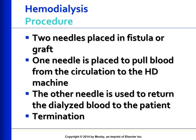For the procedure, the needles used for hemodialysis are large bore, usually 14 to 16 gauge, and are inserted into the fistula or graft to obtain vascular access. One needle pulls blood from circulation into the hemodialysis machine and the other returns dialyzed blood to the patient. The needles are attached via tubing to dialysis lines. Heparin is added to the blood as it flows into the dialyzer to prevent clotting. Dialyzer blood lines are primed with saline to eliminate air. Termination is established by flushing the dialyzer with saline to remove all the blood, then needles are removed and firm pressure is applied.